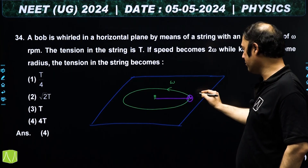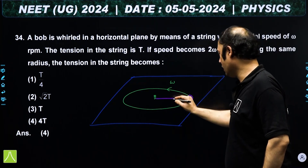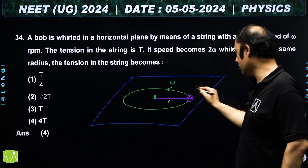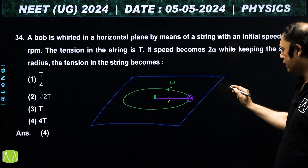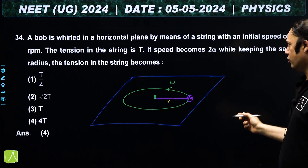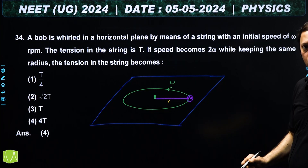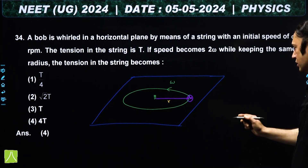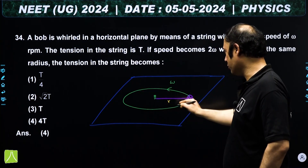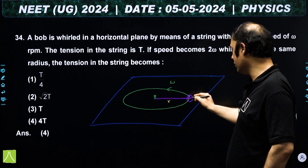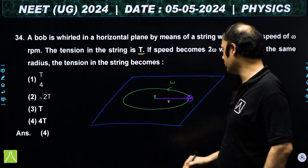Next: a pendulum of mass M with length R is placed on a smooth horizontal table. Since it is on a horizontal table, gravity Mg does not contribute. The pendulum rotates with constant angular velocity ω. We need to find the tension.